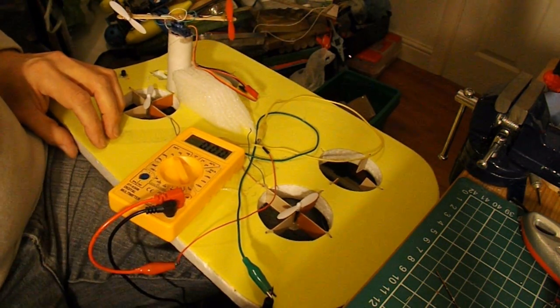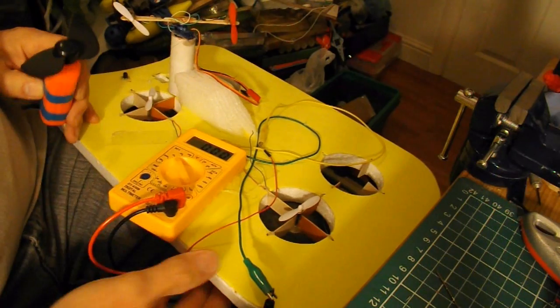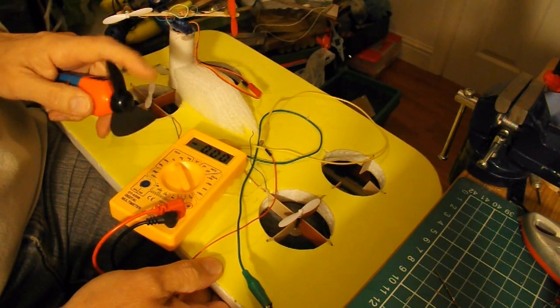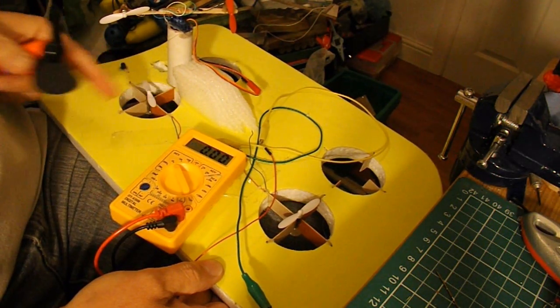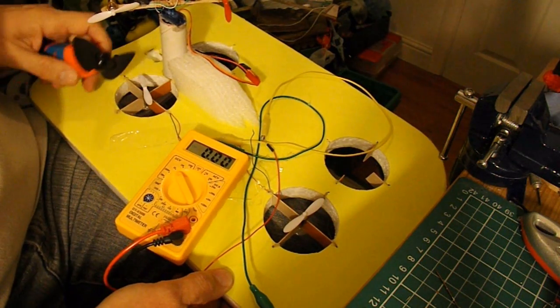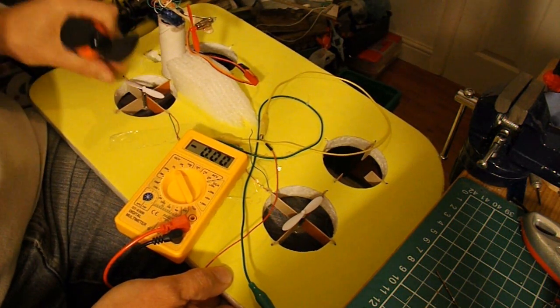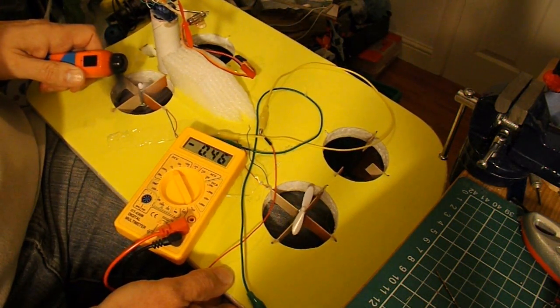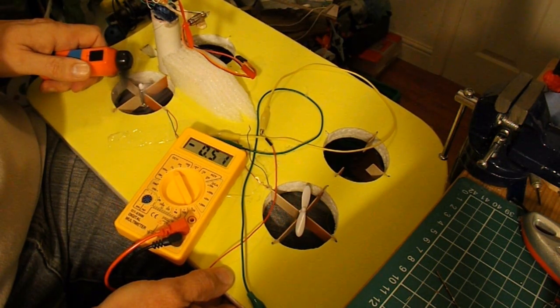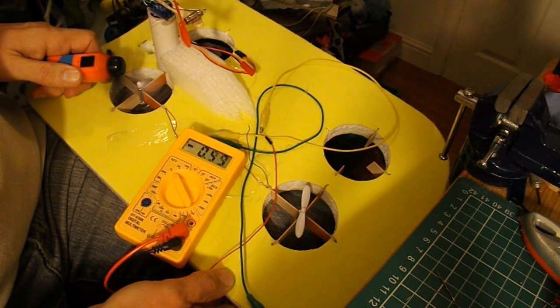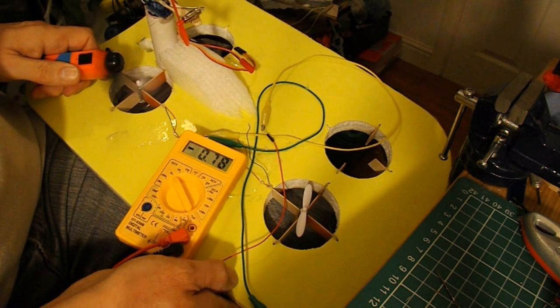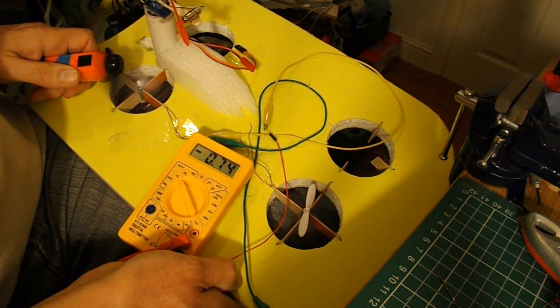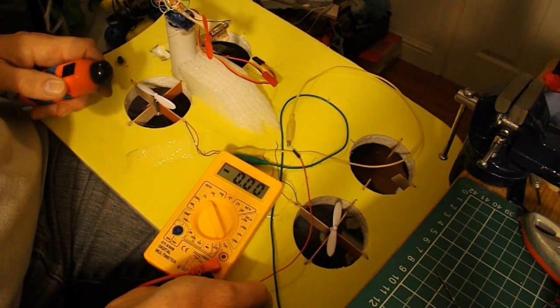But if I use that fan again, now I can't put the fan directly over it because it hits the side there, but I can use the fan blade, it's a soft blade, to actually flick the propeller. Getting about half a volt out of it.